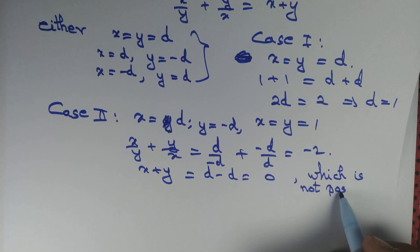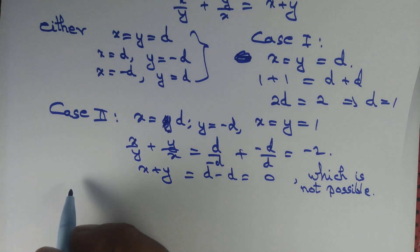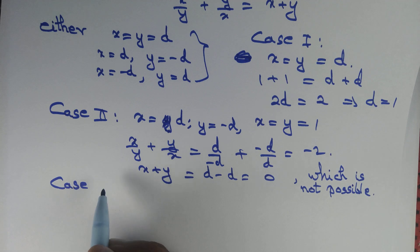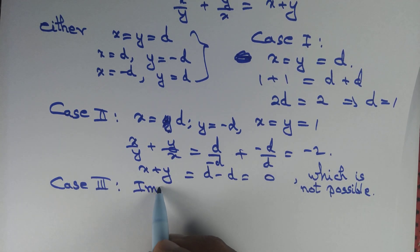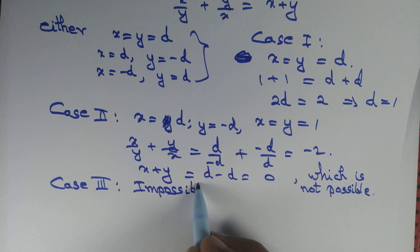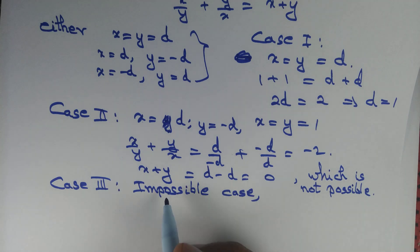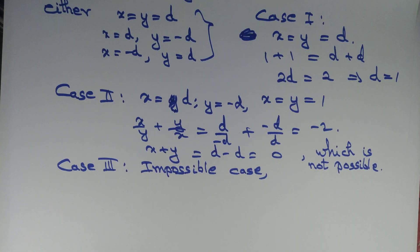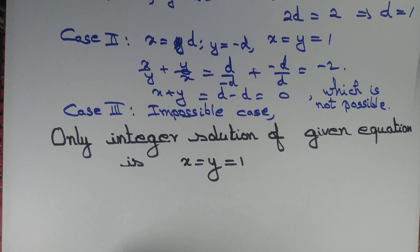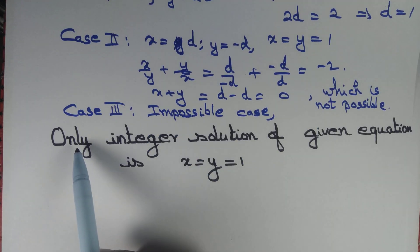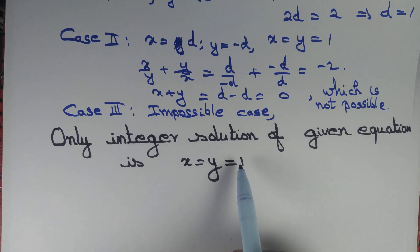Case 3 can similarly be shown to be an impossible case. Therefore we are forced to conclude that the only integer solution to the given equation is x = y = 1.